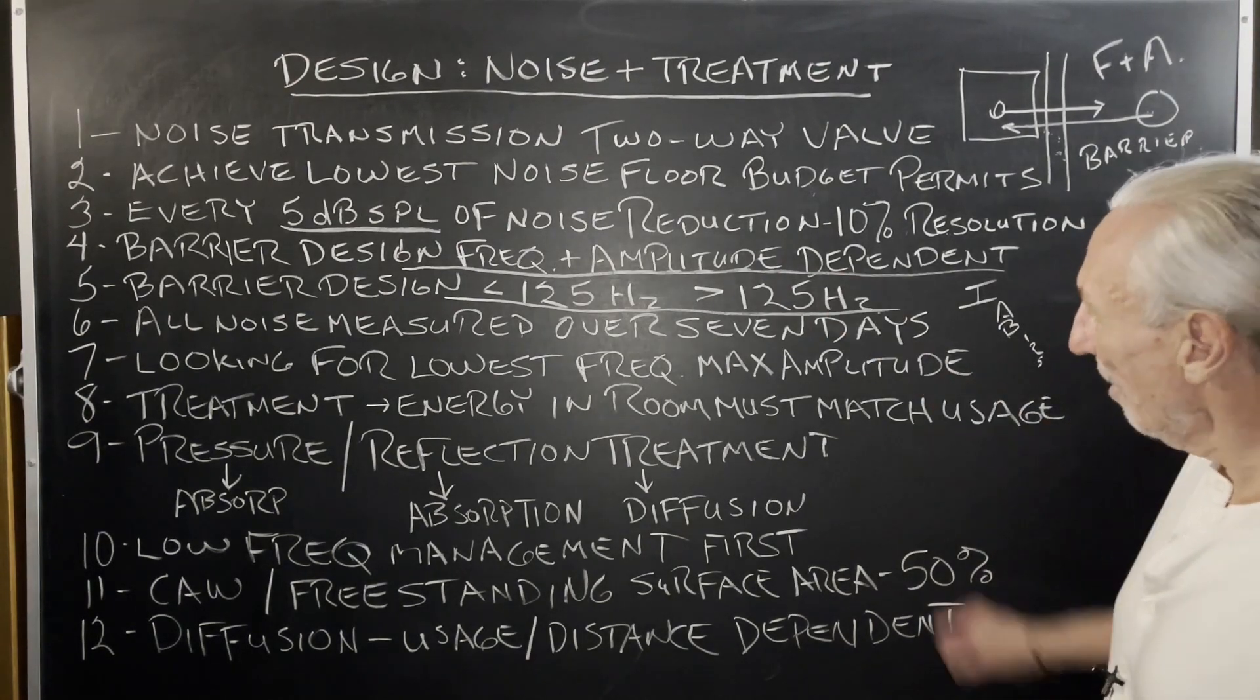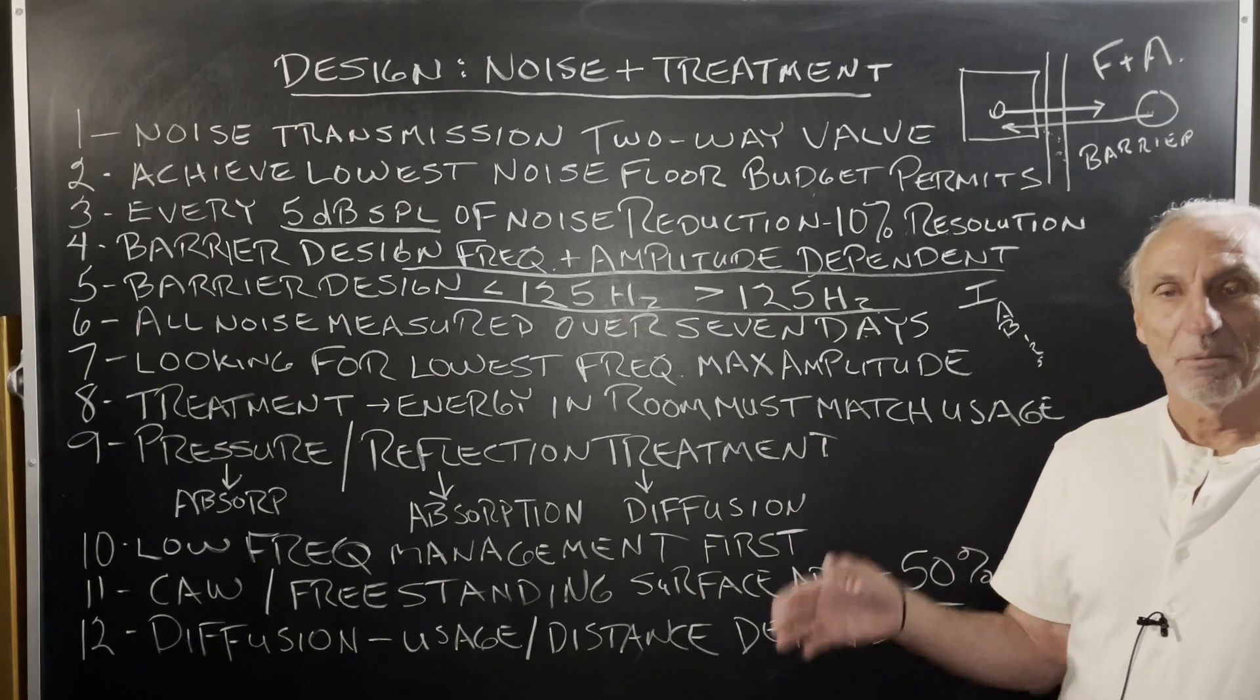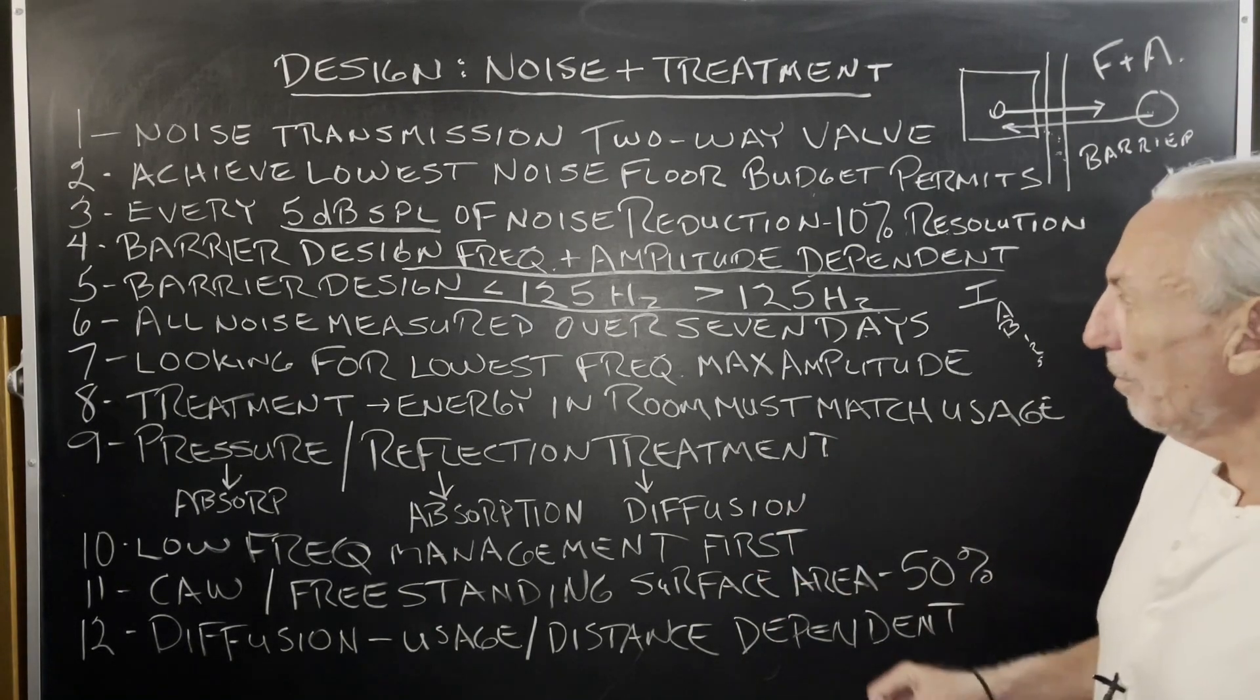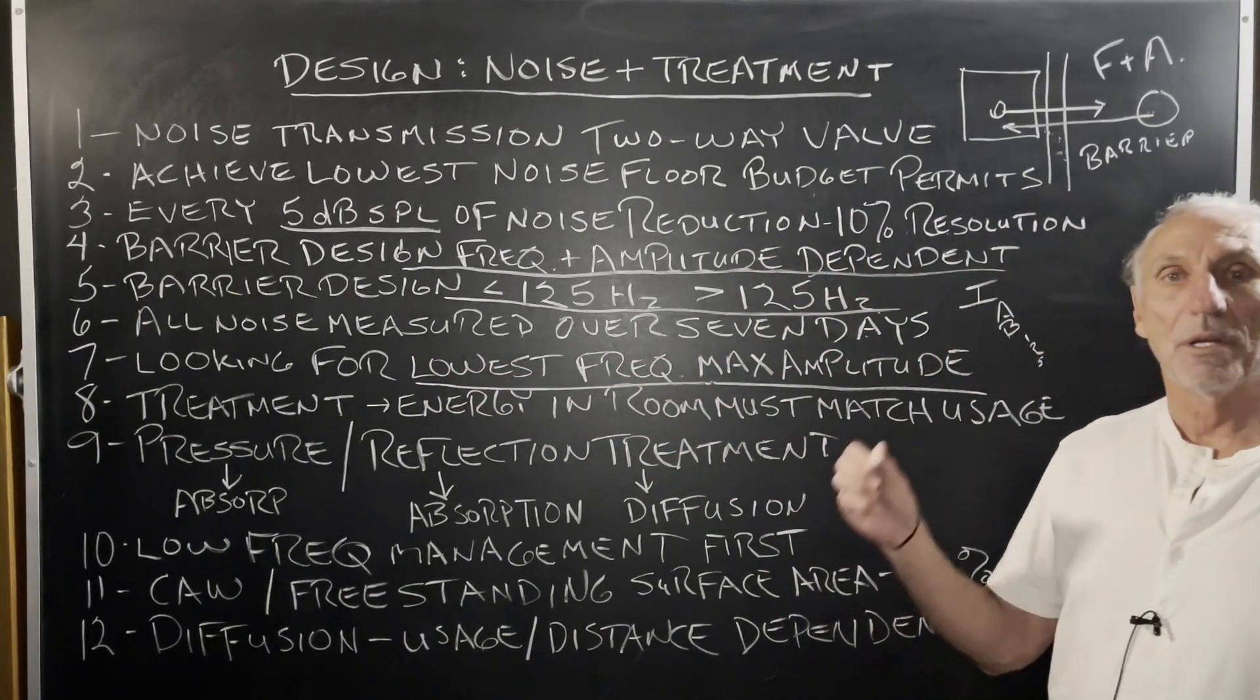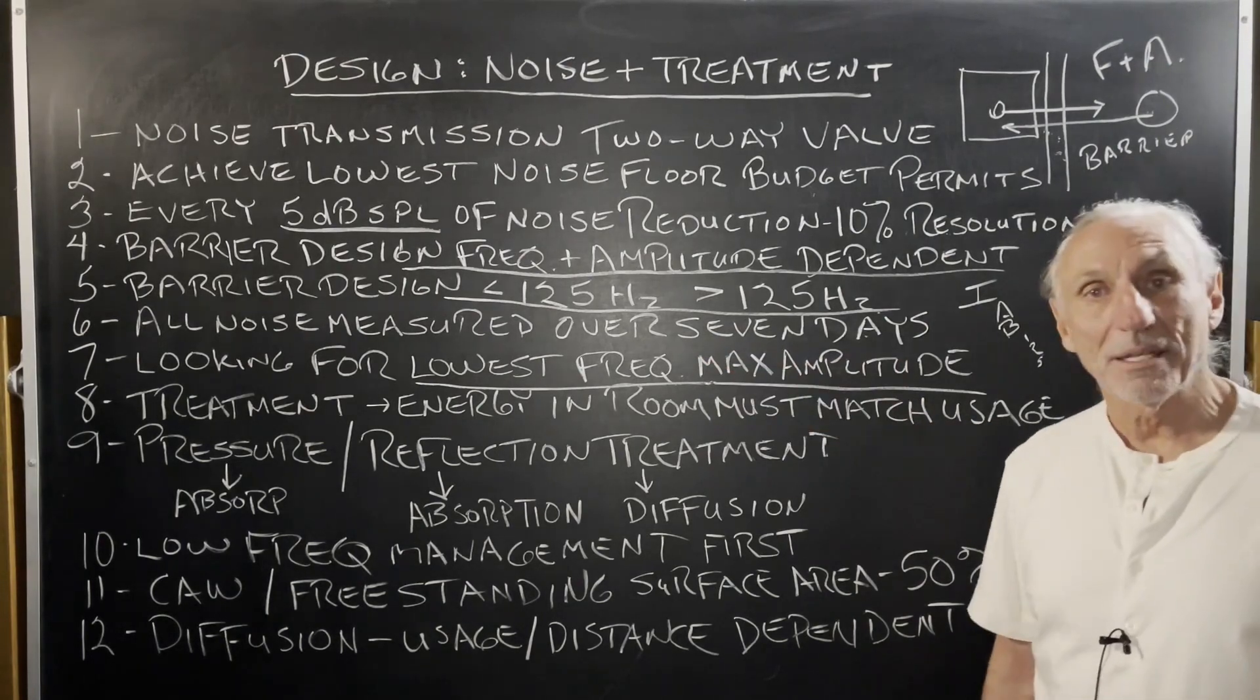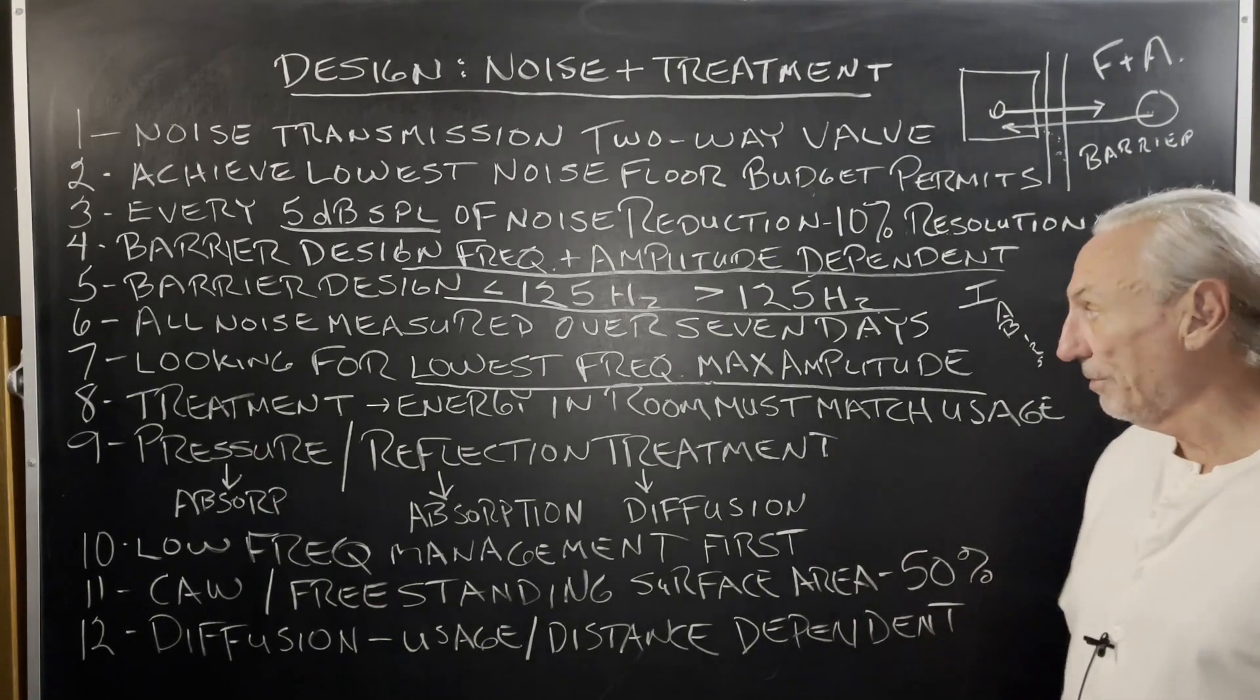Big difference here. All noise must be measured over seven days. We have to have a picture each day what's going on. We take noise readings at the quietest part of the day and the loudest part of the day. They're called mins and maxes. What are we looking for? We're looking for the lowest frequency and the maximum amplitude, the loudest that low frequency is and on what day it occurs. Because if we design for lowest frequency, maximum amplitude in our barrier, then we're covered with the other days that don't reach those maximum levels. So that's the goal.